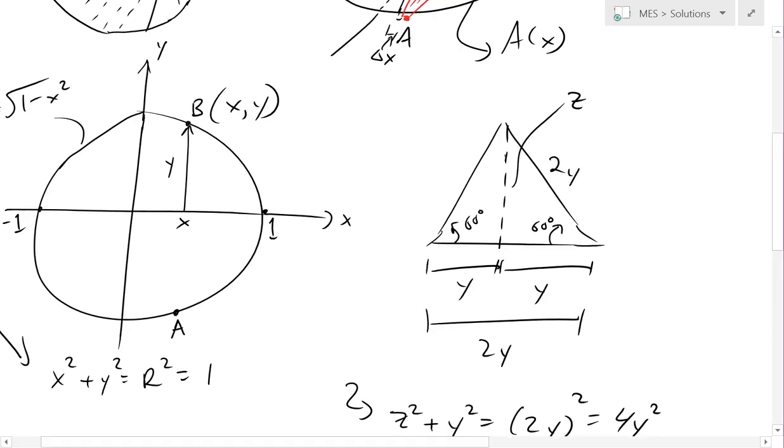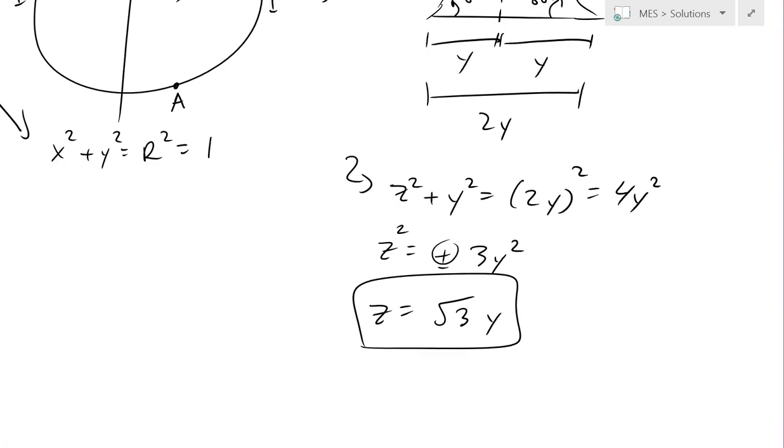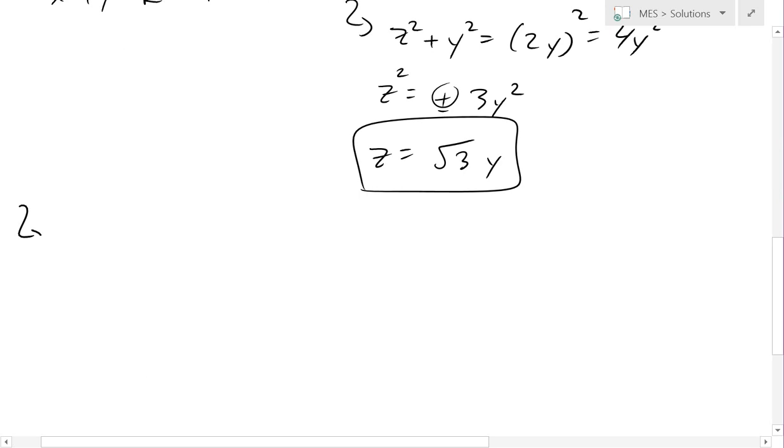So now we can solve for this area right here. Our A of x is equal to the area of the triangle, which is just base times height divided by 2. The height is just our z, so it equals z times the base which is our 2y, times by our height which is z, divided by 2. So these 2's cancel.